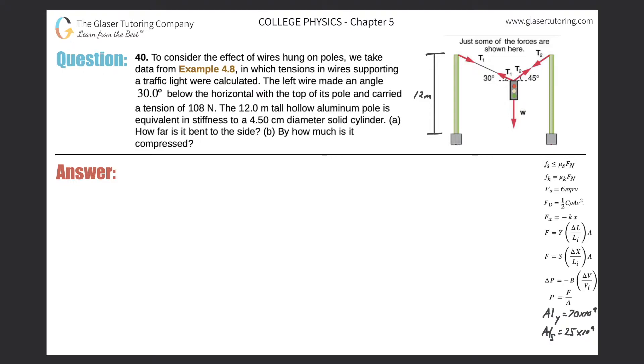Number 40. To consider the effect of wires hung on poles, we take data from example 4.8 in which tension in wires supporting a traffic light were calculated. The left wire made an angle of 30 degrees below the horizontal with the top of its pole and carried a tension of 108 newtons. The 12 meter tall hollow aluminum pole is equivalent in stiffness to a 4.5 centimeter diameter solid cylinder. Letter A: How far is it bent to the side?